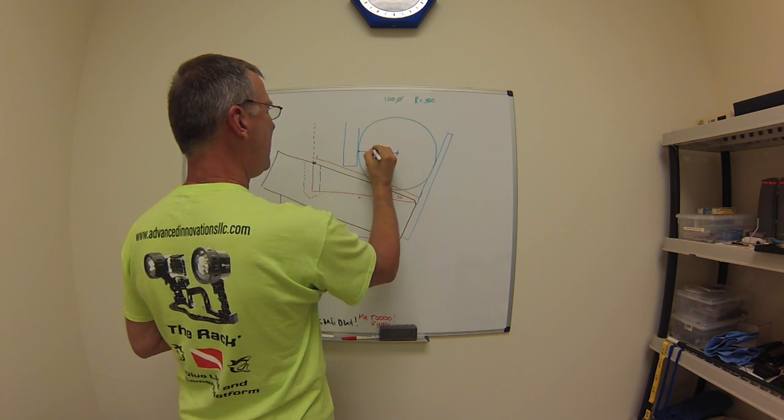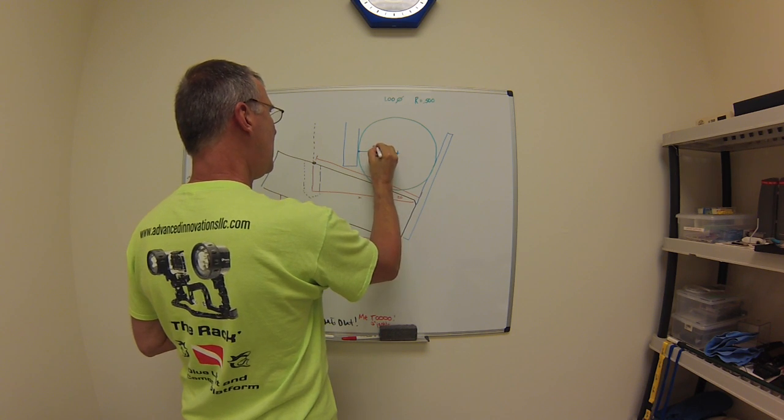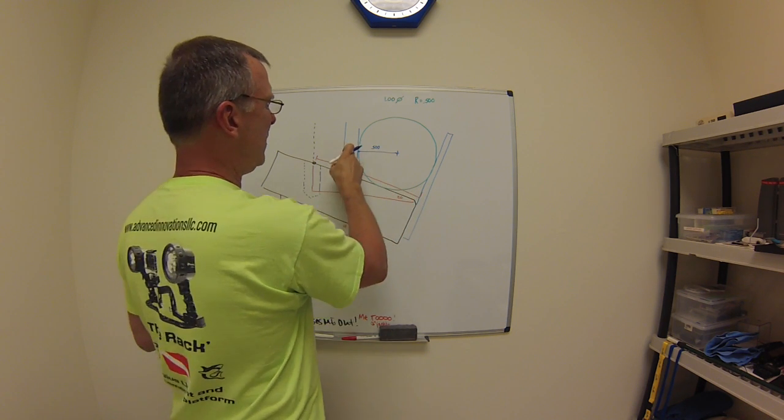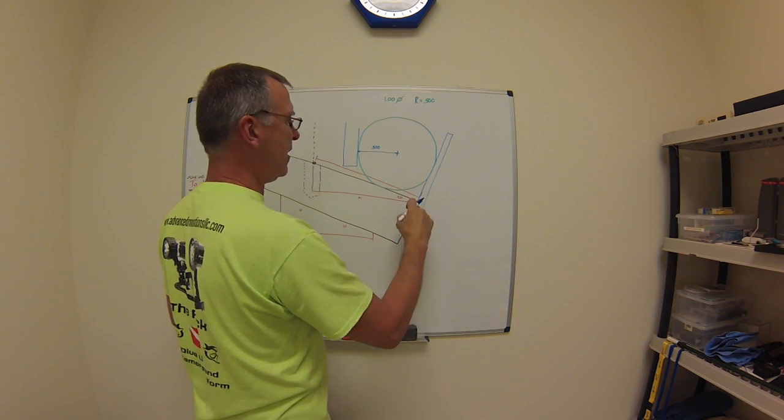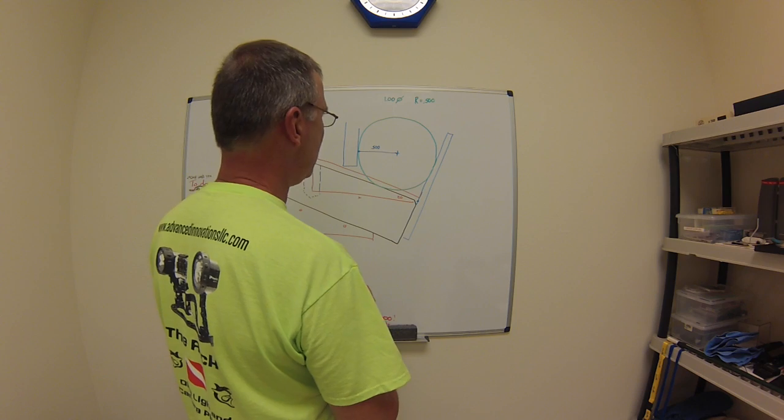So we know this is 500 because it's the radius of the pin. You know what this is, and all you need to do is find this right there. And this is where it may get a little tricky.